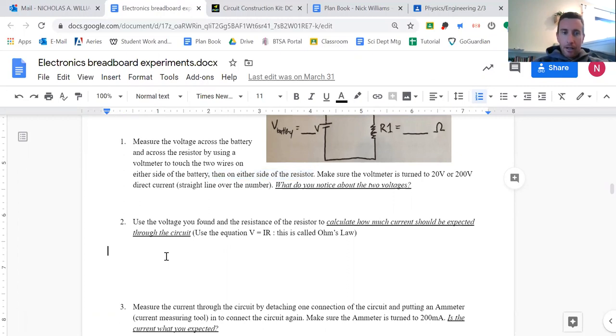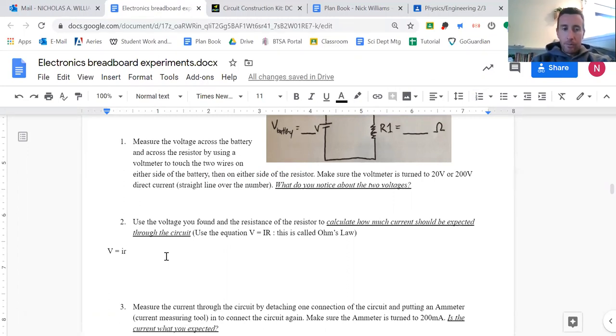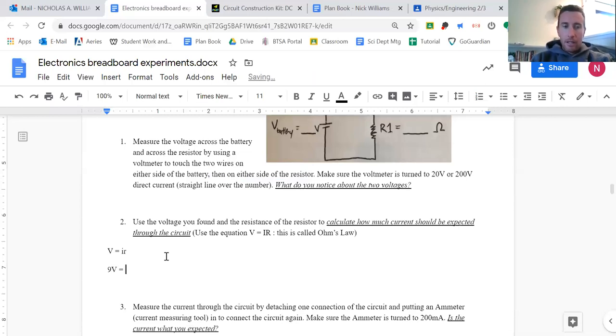So now I go back in here and I'm gonna use the equation V equals IR. So V equals IR. And then the next thing is plugging in my values. I had a 9 volt battery equals I, which is what I'm solving for, times my resistance, which was 10 ohms. I would divide both sides by 10. So 9 divided by 10 gives me a current equal to 0.9 amps. So how much current should be expected through the circuit? I'm expecting 0.9 amps.